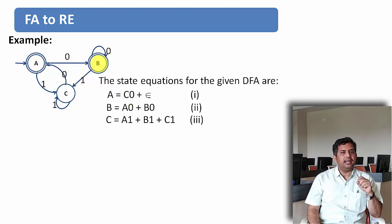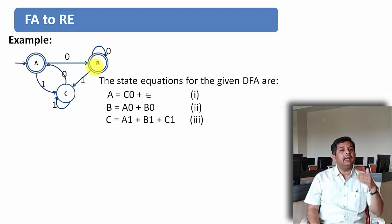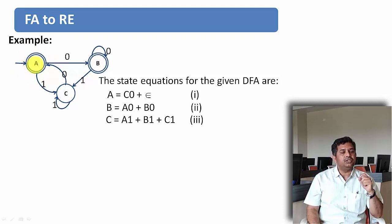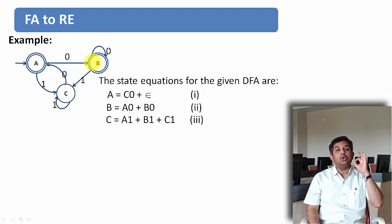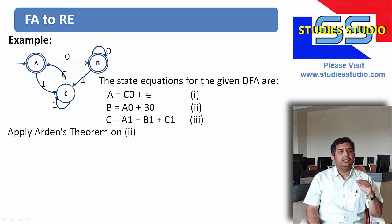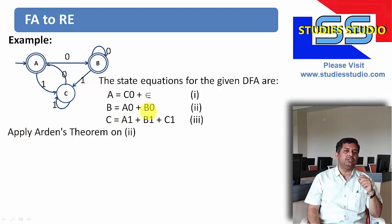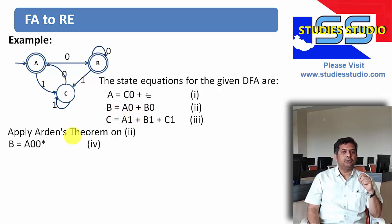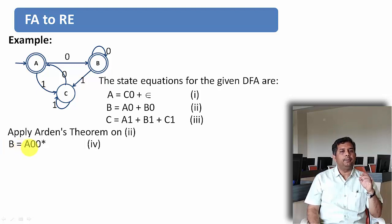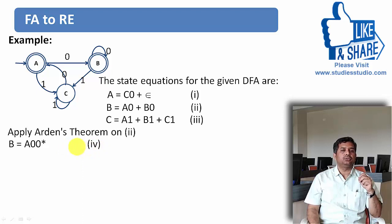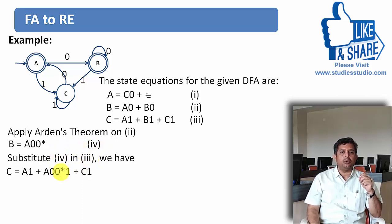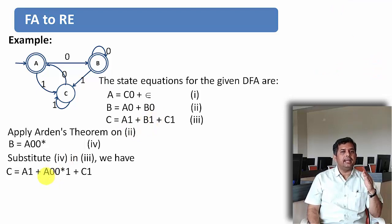State A and state B are the final states. For every final state we need to solve the equations, then add the solutions together. Apply Arden's theorem to equation 2: B equal to A·0 plus B·0. Here R is B, P is 0, and Q is A·0. Applying Q·P star gives B equal to A·0·0 star — let this be equation 4. Now substitute equation 4 into equation 3 in place of B: C equal to A·1 plus A·0·0 star·1 plus C·1.